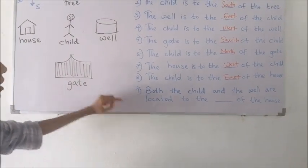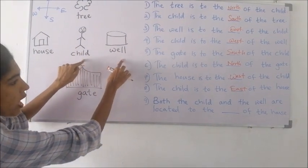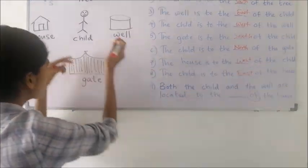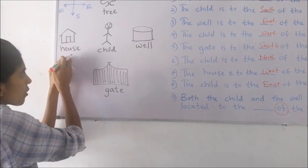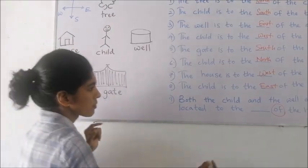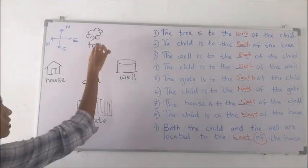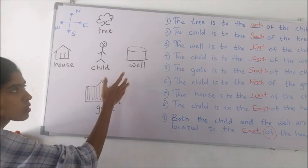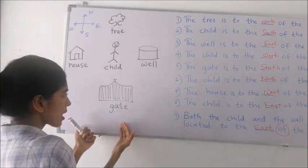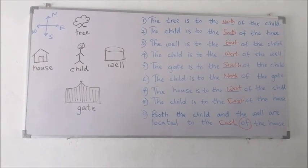Now a different direction: both the child and the well are located to which direction of the house? You go and stand at the house, and from that point you look at the child and well — they are to the east direction. Then, the tree and the child both are to the north direction of the gate. Likewise, you can fill the spaces here.